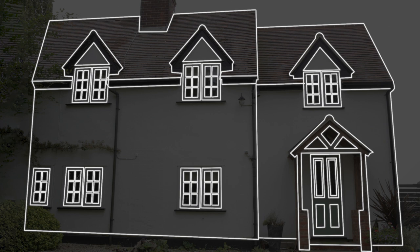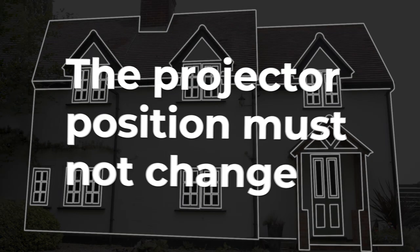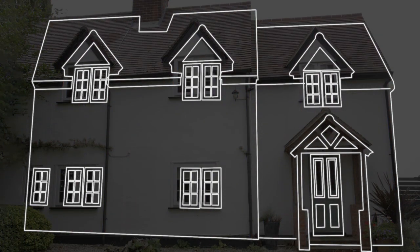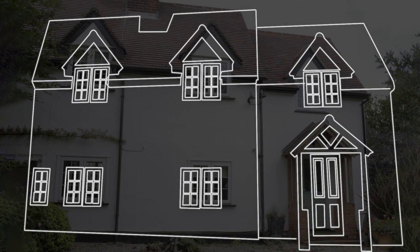The most important thing to remember with this method is that through the entire process the projector position must not change. Once you've designed video content from your projector's point of view, if the projector then moves — if your kid knocks into it, or there's a thunderstorm and you bring it in — your designs won't look quite right anymore unless you find that exact projector position again. And if you want to project from a different angle entirely, or introduce an additional projector on the other side, your video content really won't look right and you'd have to redesign all your content for the new point of view.